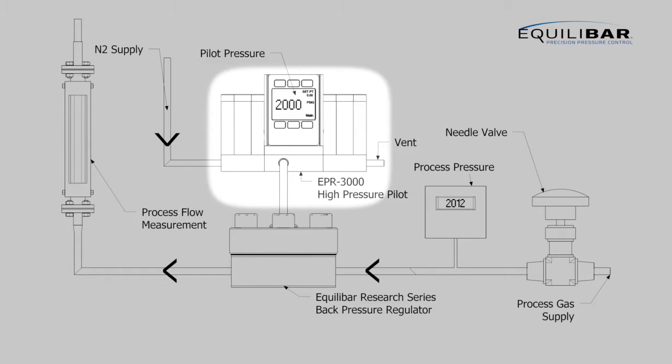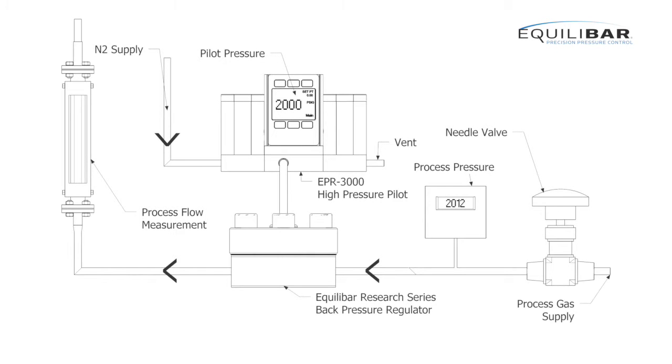The EPR3000 electronic pilot requires a high pressure nitrogen supply and vents to atmosphere only when you lower the desired set point.